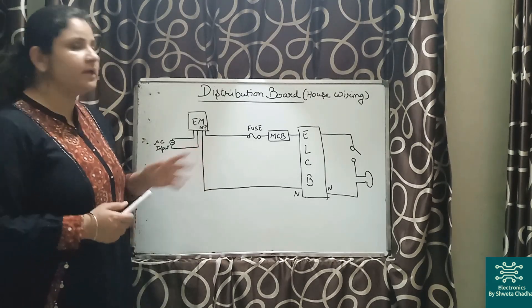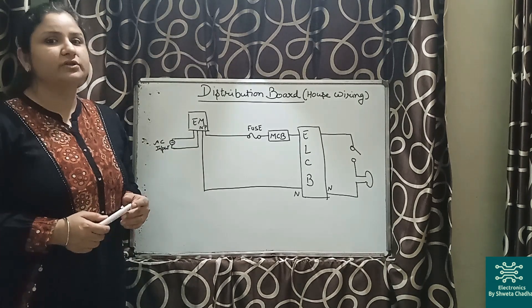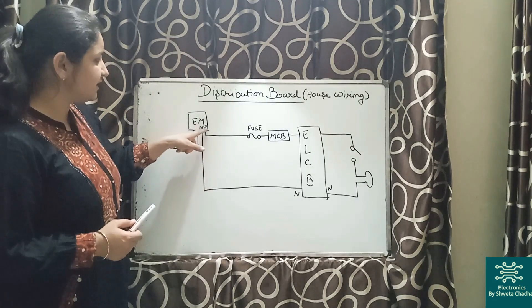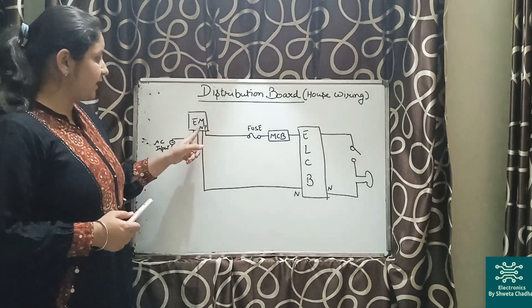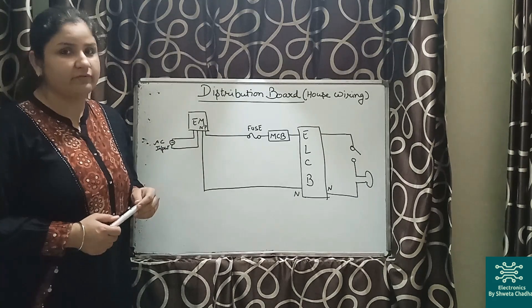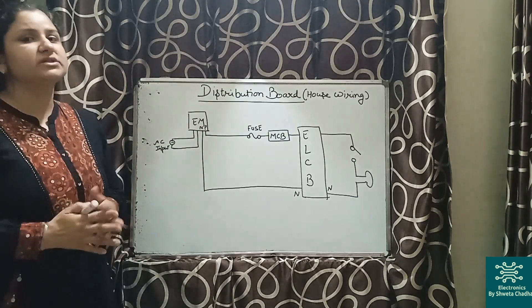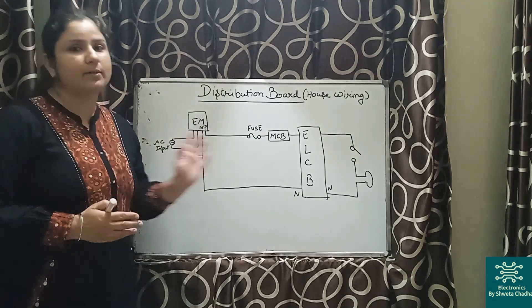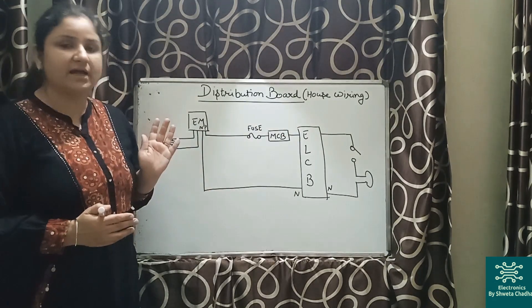The first wire is the phase wire, as you can see over here. N stands for neutral wire. All the main connections will be done in the phase wire, whereas the neutral wire is just to complete our connections and the circuit.